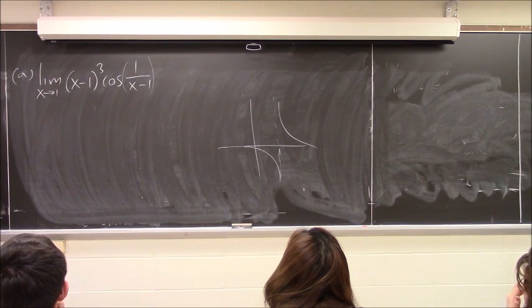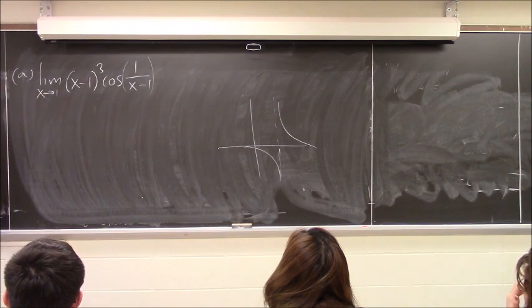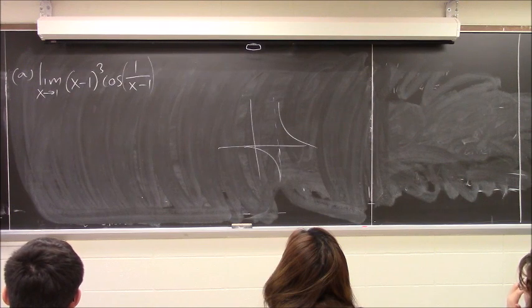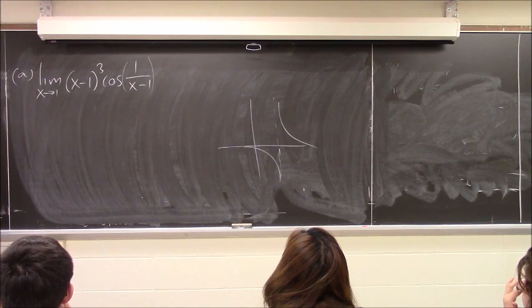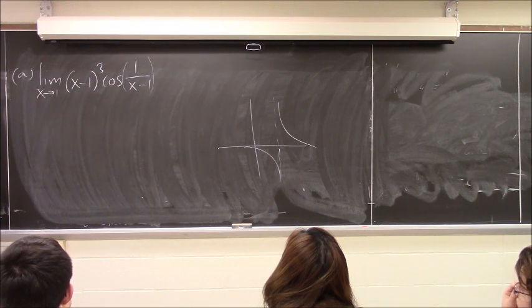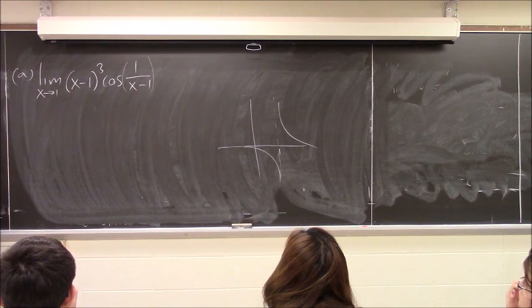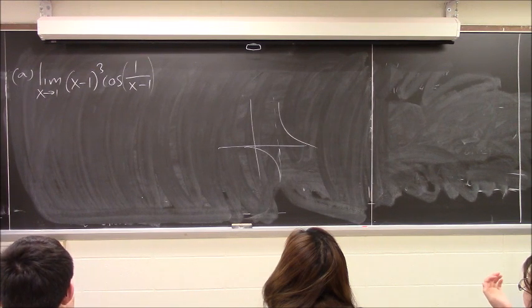And even if it went to infinity, what's cosine of infinity? It's ridiculous — cosine of infinity is ambiguous. Cosine just keeps bouncing up and down; it doesn't really settle at a number. It doesn't exist.